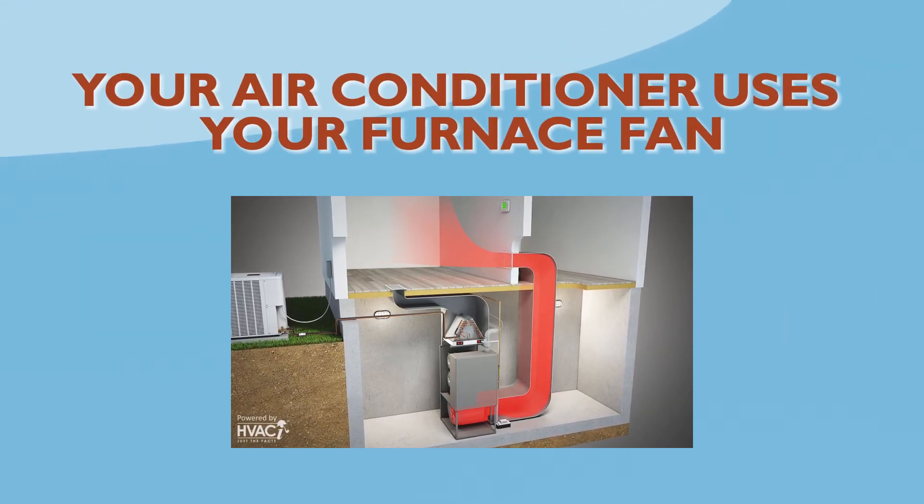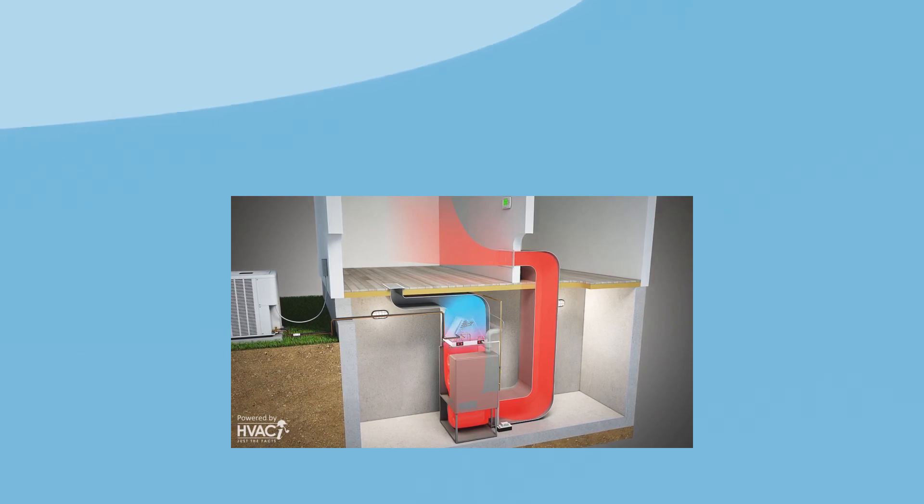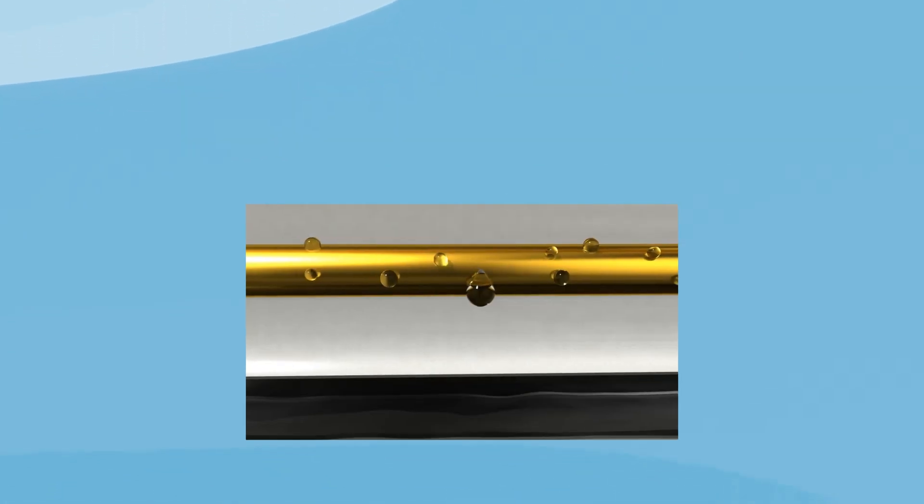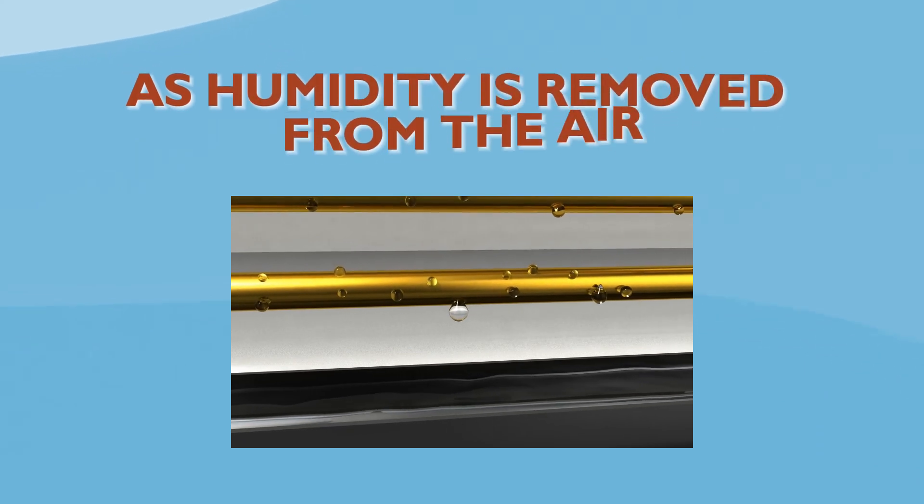Your air conditioner uses your furnace fan to distribute cool air throughout your home as it blows air over the evaporator coil. This produces condensate as humidity is removed from the air.